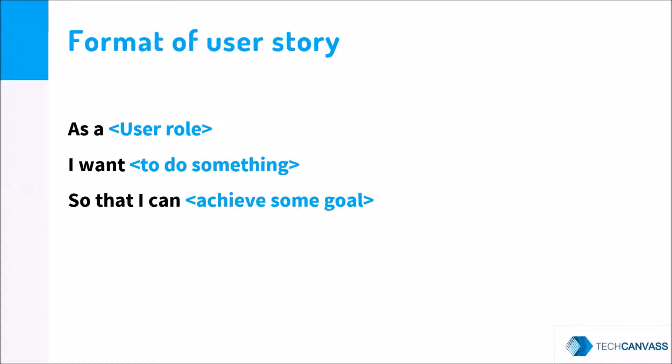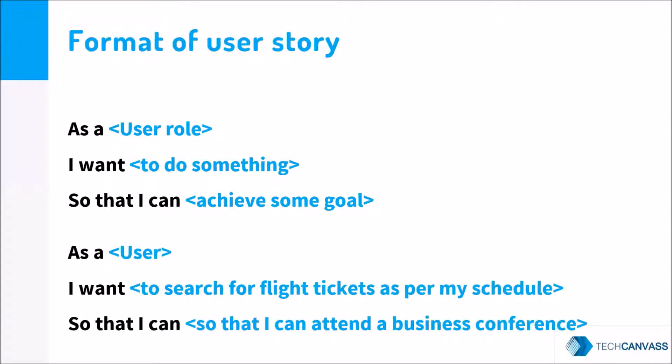Taking an example: as a user, I want to search for flight tickets as per my schedule so that I can attend a business conference. Here we are covering three aspects: who is performing this activity, what activity is being performed, and why that activity is being performed.